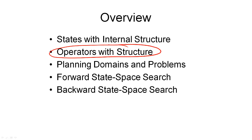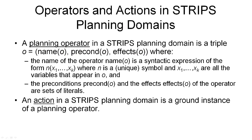Remember that actions are what give us the state transitions in our state transition system. For states, I started with some examples and informal definitions followed by the formal definition of what a STRIPS representation state is. For operators, I'll do it the other way round — I will start with the formal definition of what a STRIPS operator is.